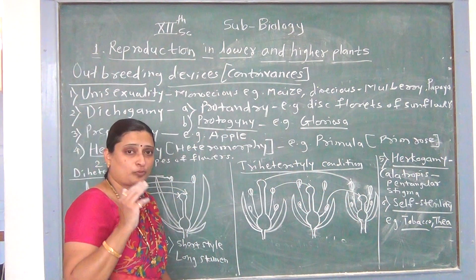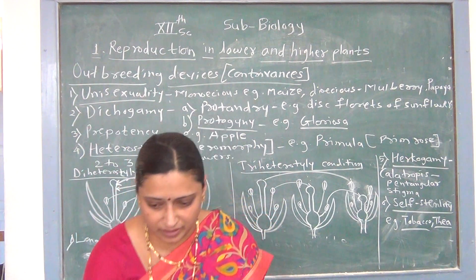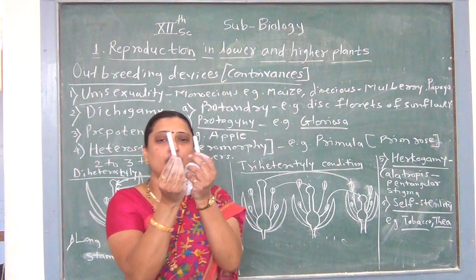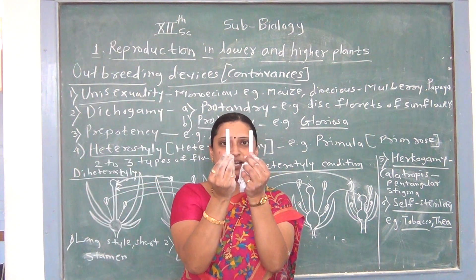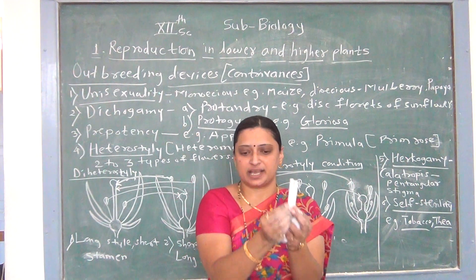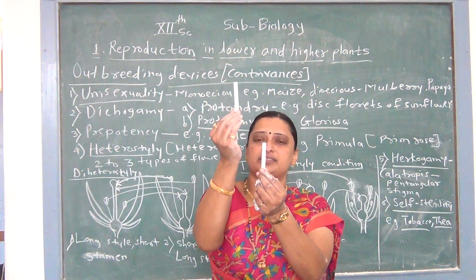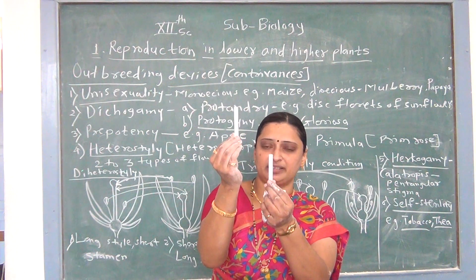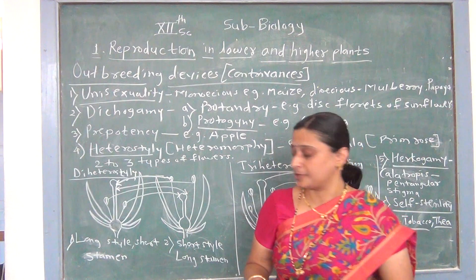Heteromorphy means anther and stigma are present at the same level and carry out pollination. However, in the heteromorphy condition relevant to outbreeding, the stigma is above and the anthers are below the level, meaning they are not present at the same level. Therefore, cross-pollination occurs and self-pollination is stopped.